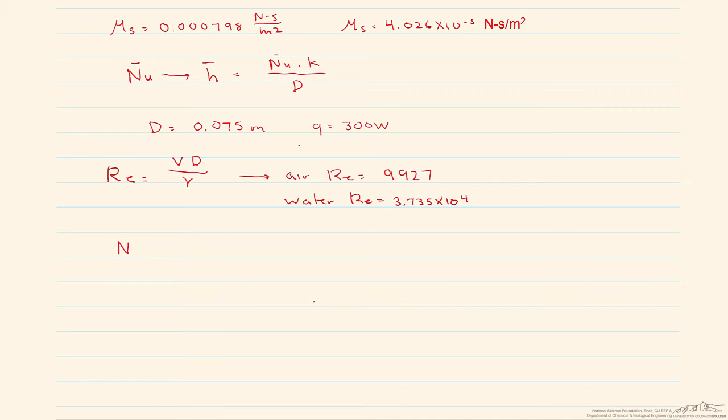When we find the Nusselt number for the air, that's going to be equal to 50.6. When we find the Nusselt number for the water, that's going to be equal to 334.8. You can see already the large difference in our Nusselt numbers because of the different properties of our fluids.